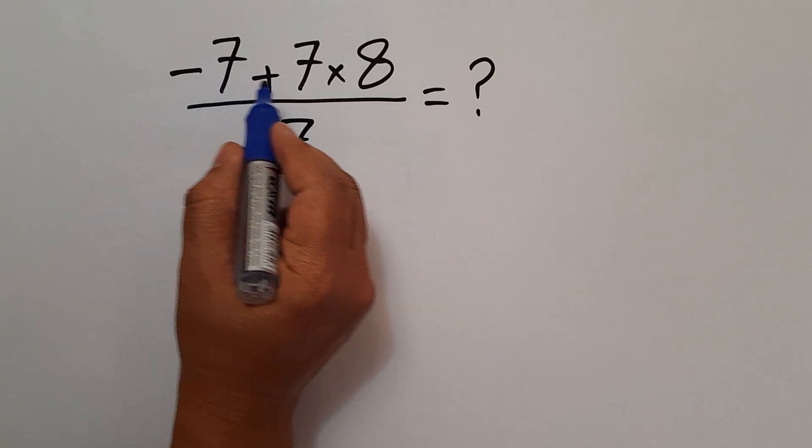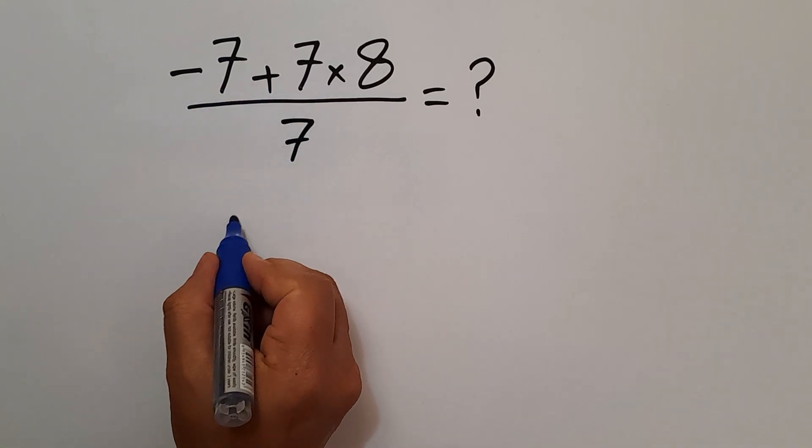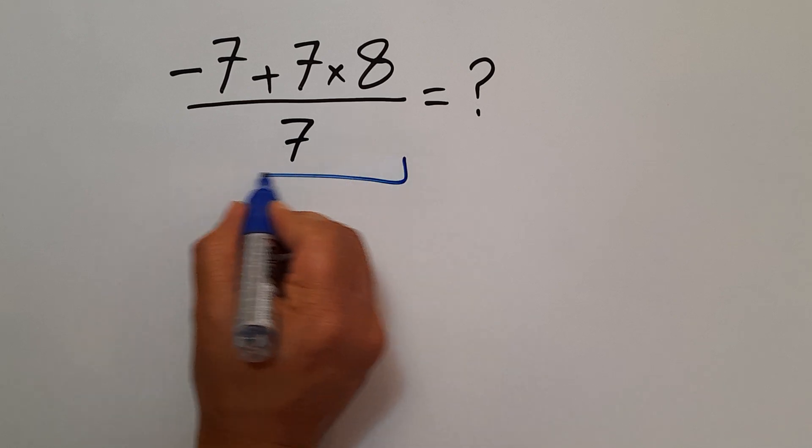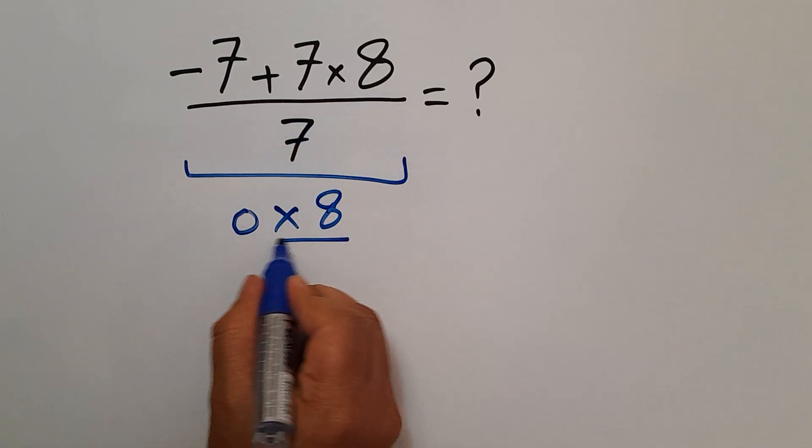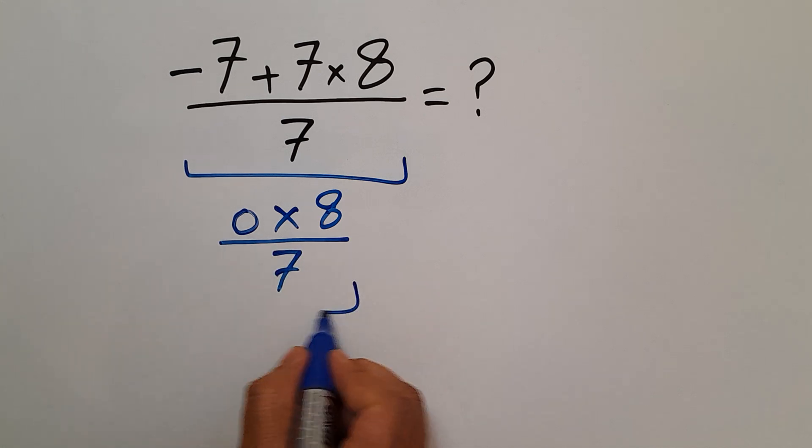Negative 7 plus 7 gives us 0, so 0 times 8 divided by 7, and this is equal to 0.